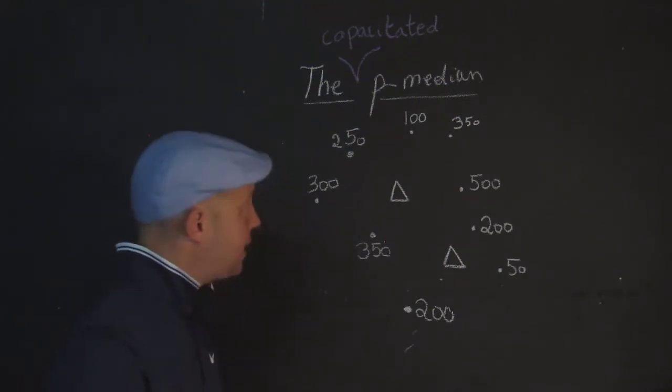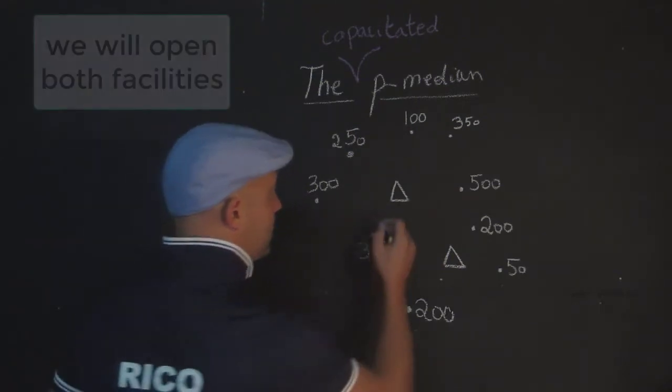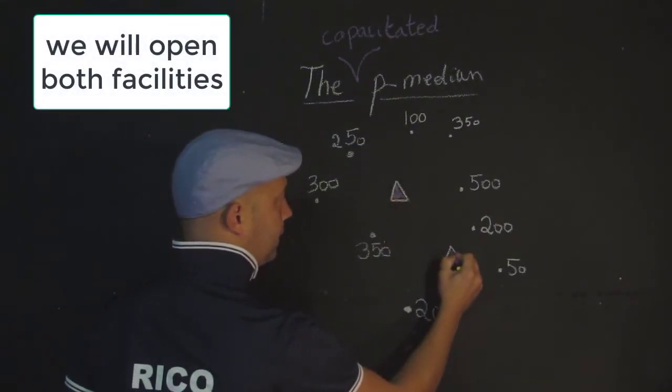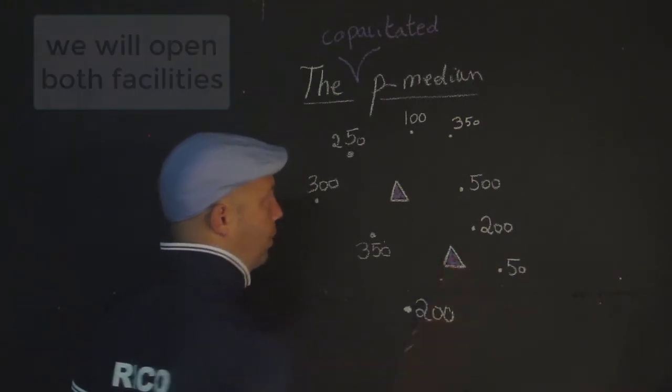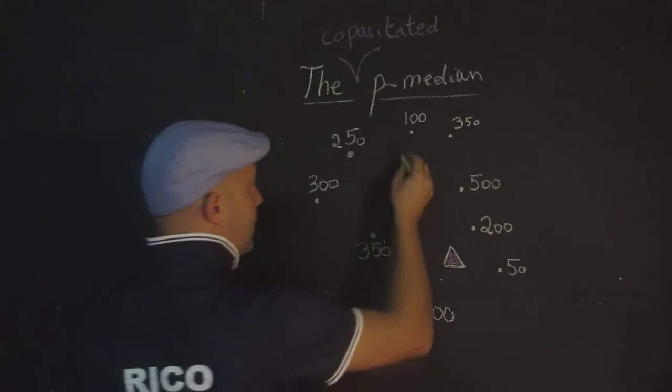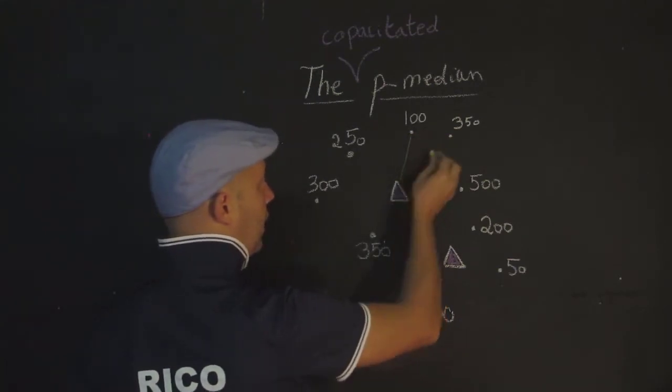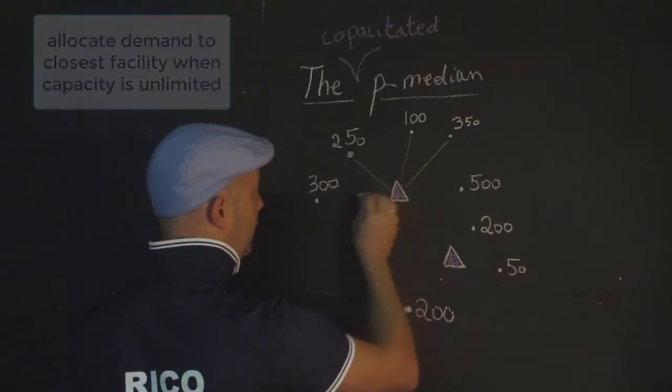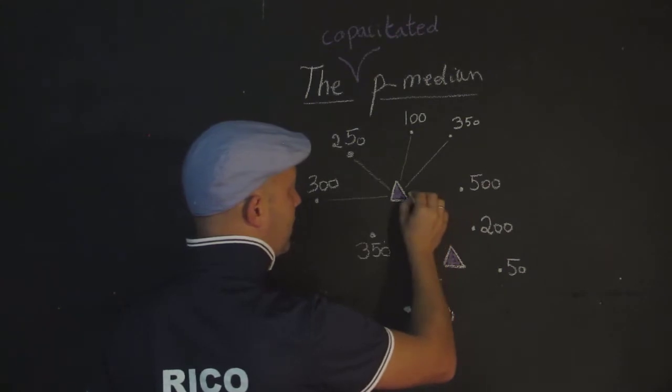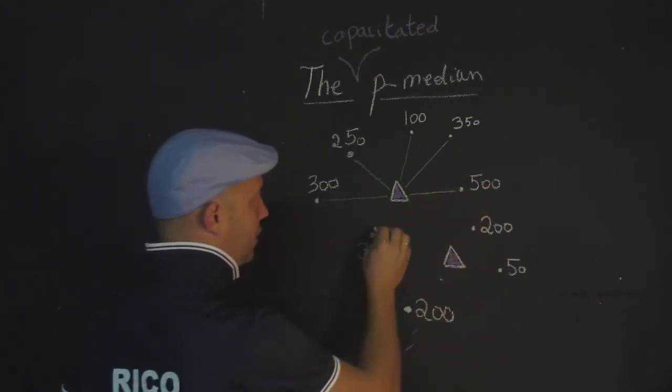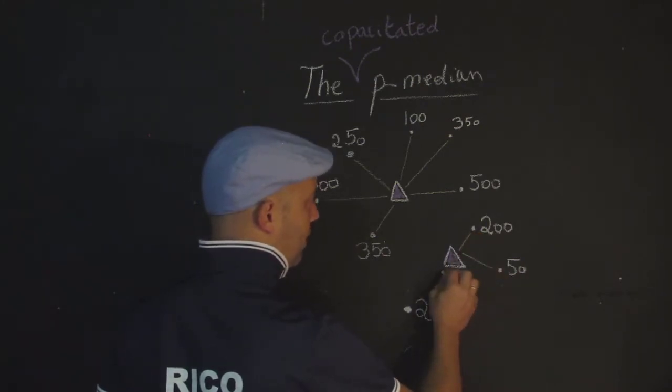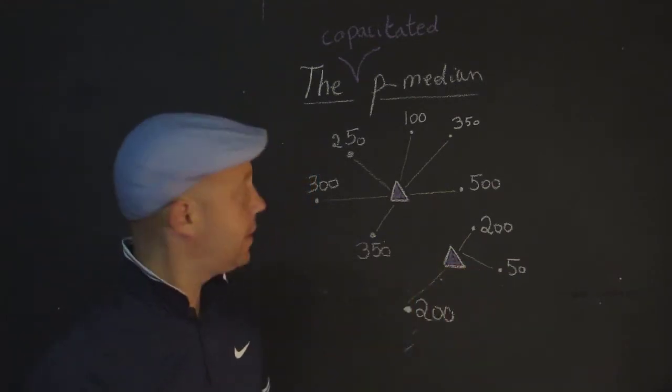So in this particular case here, if we decide to open both facilities, coat them in purple, that means they're both open. In that case, what we would do, we would then assign every demand node to its closest open facility, as long as that facility is open. And so then it's essentially a matter of seeing what is the closest. Those are effectively called spider lines, or assignment lines, or allocation lines.